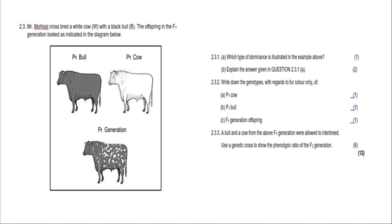You can clearly see the diagram here — you are crossing a black bull with capital letter B and a white cow with capital letter W. When the letters are in capitals, the first thing you need to understand as a Grade 12 learner is that capital means dominant. If it is non-dominant, we use a small letter W or small letter B, and we call that recessive.